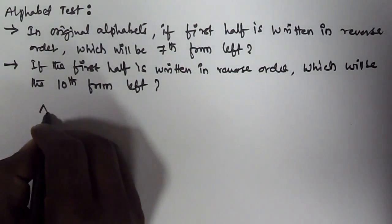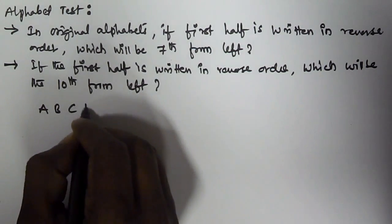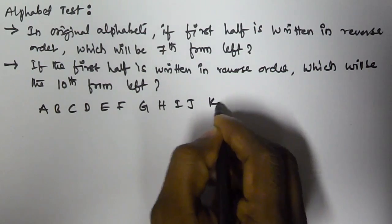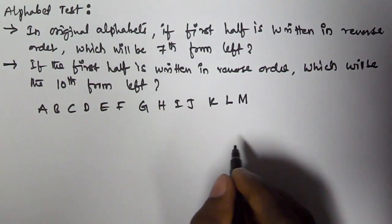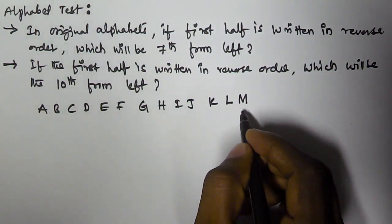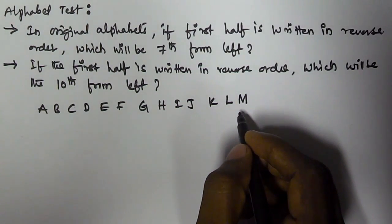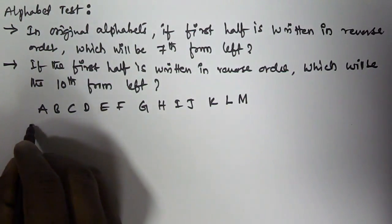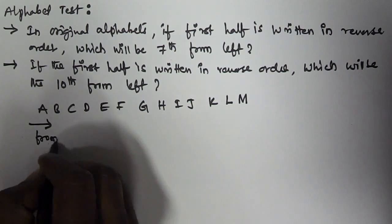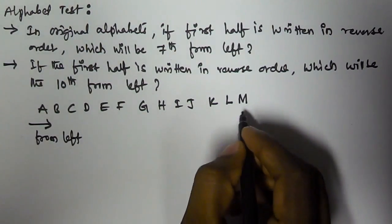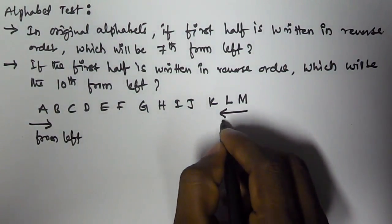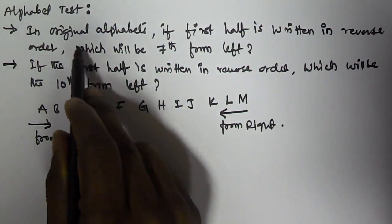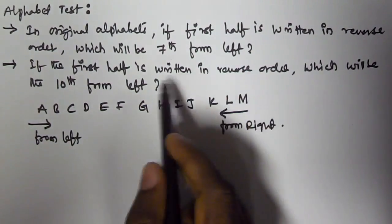The first half contains letters from A to M: A B C D E F G H I J K L M. These are the first half, and M is the 13th letter. There are 26 letters in total, so the first half is A to M. If you count from left it goes A to M, and if you count from right it goes M to A.